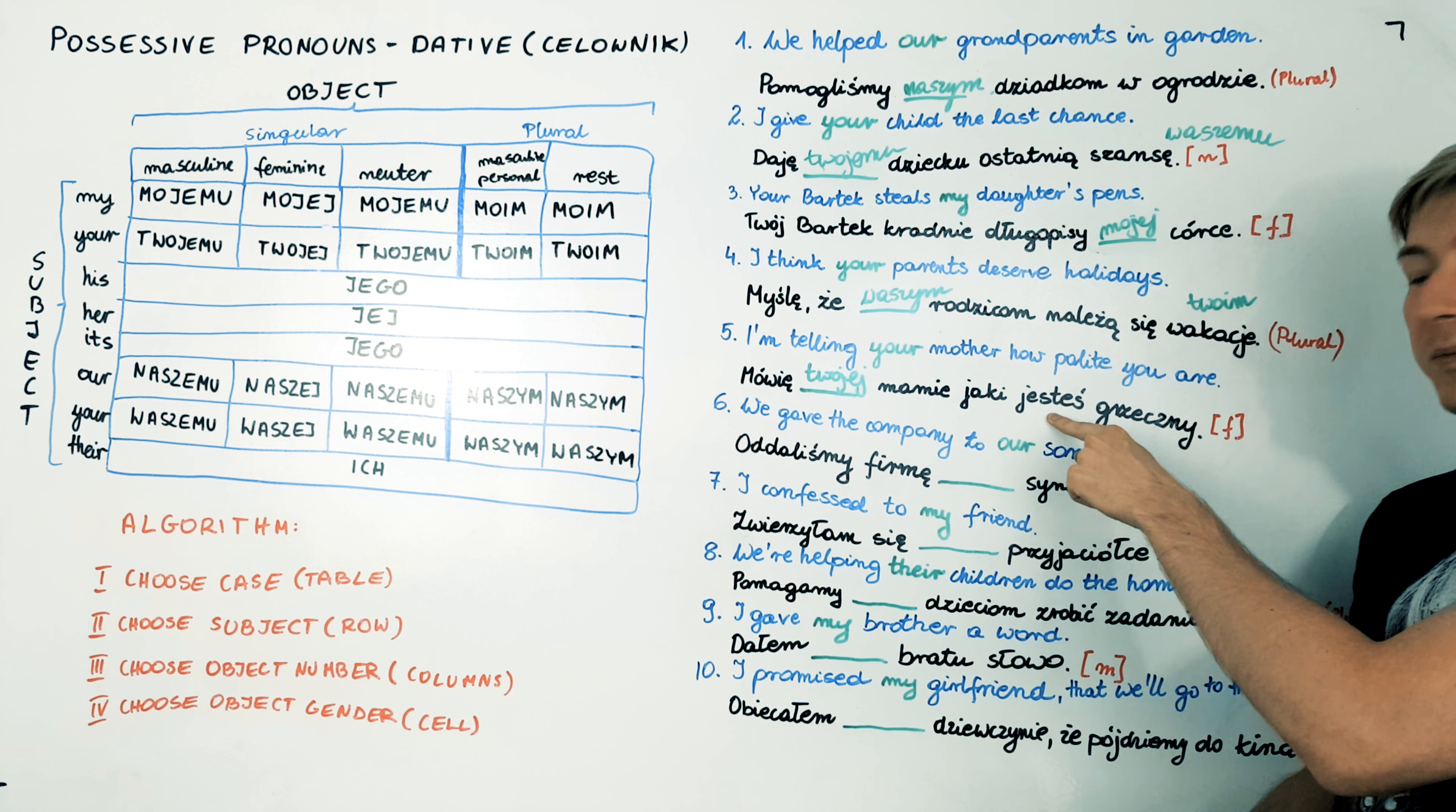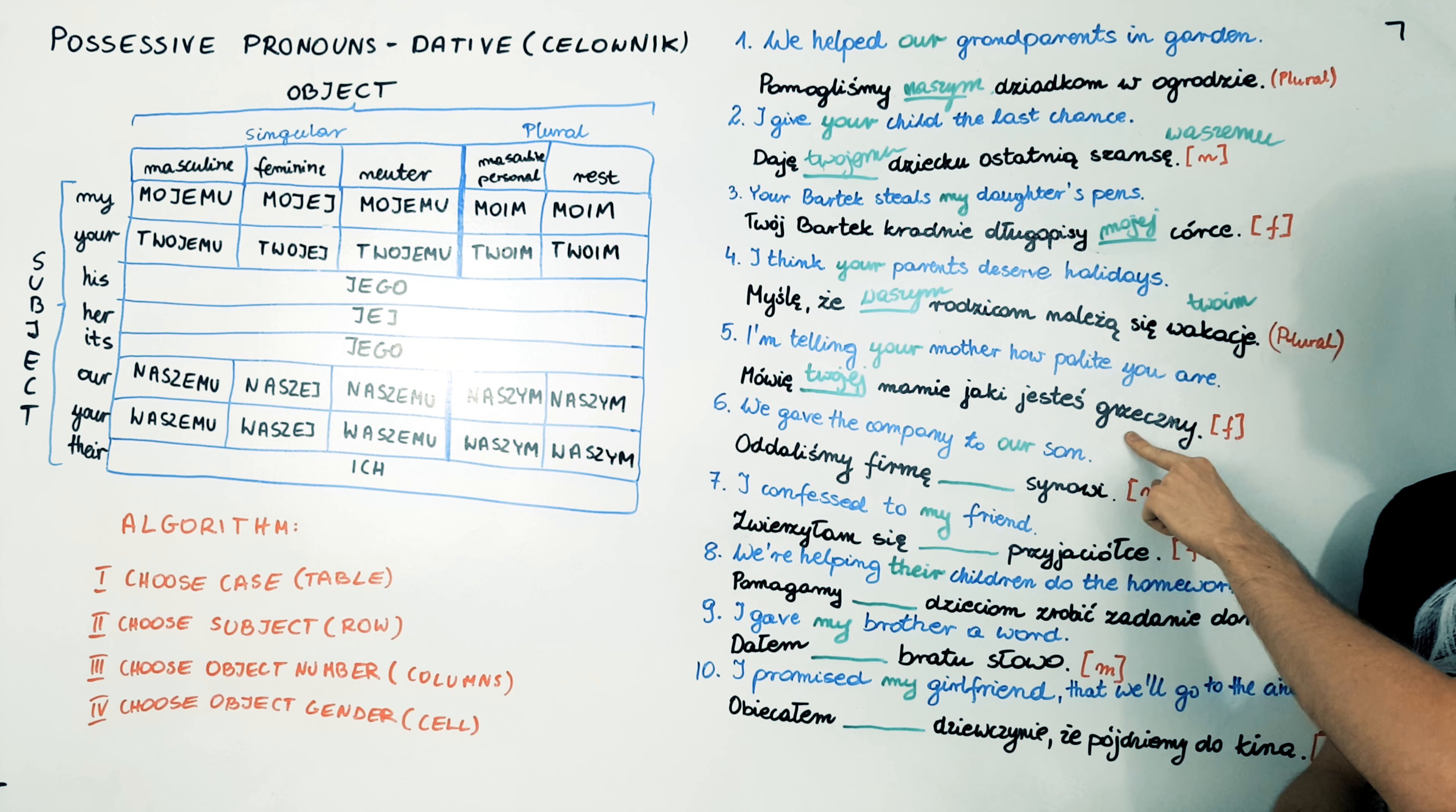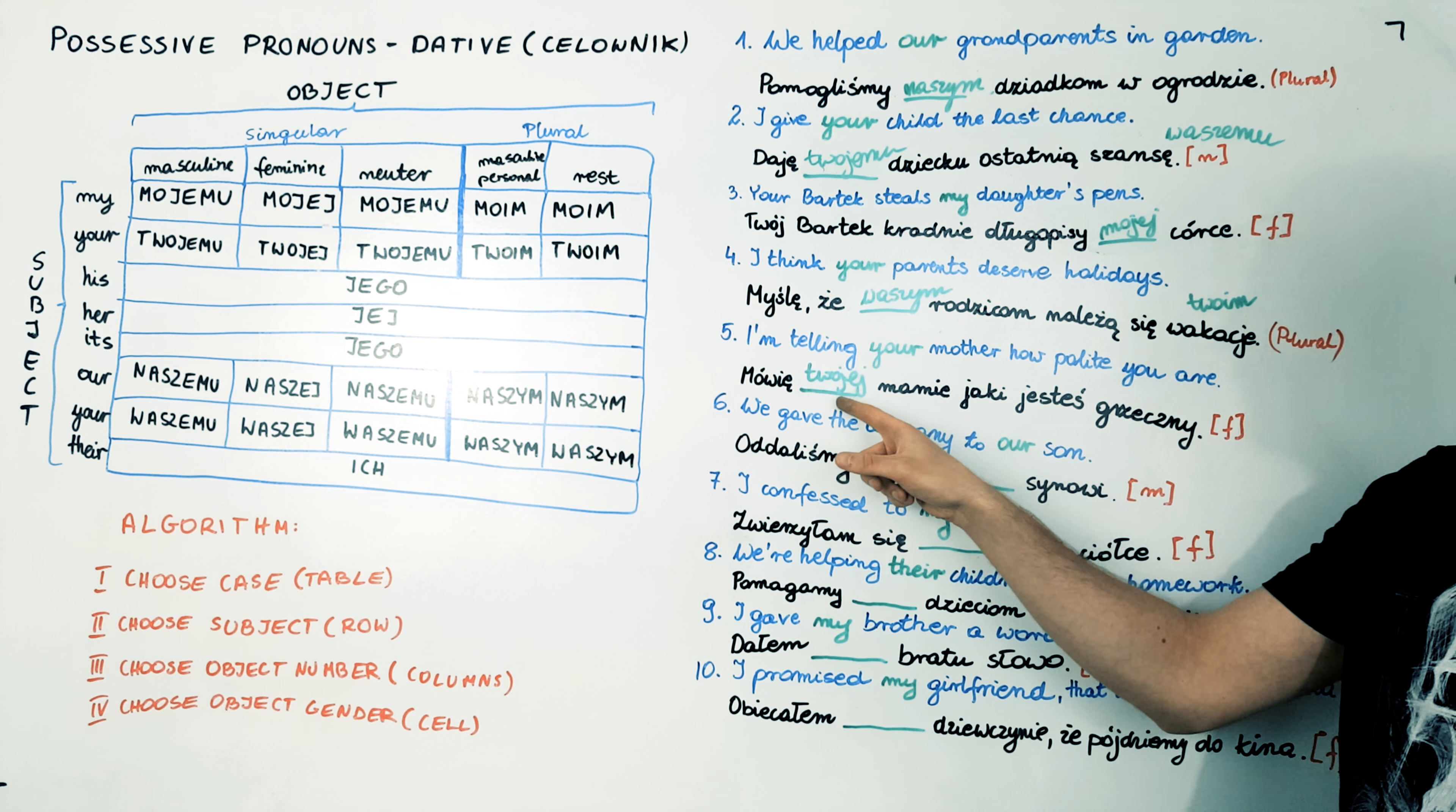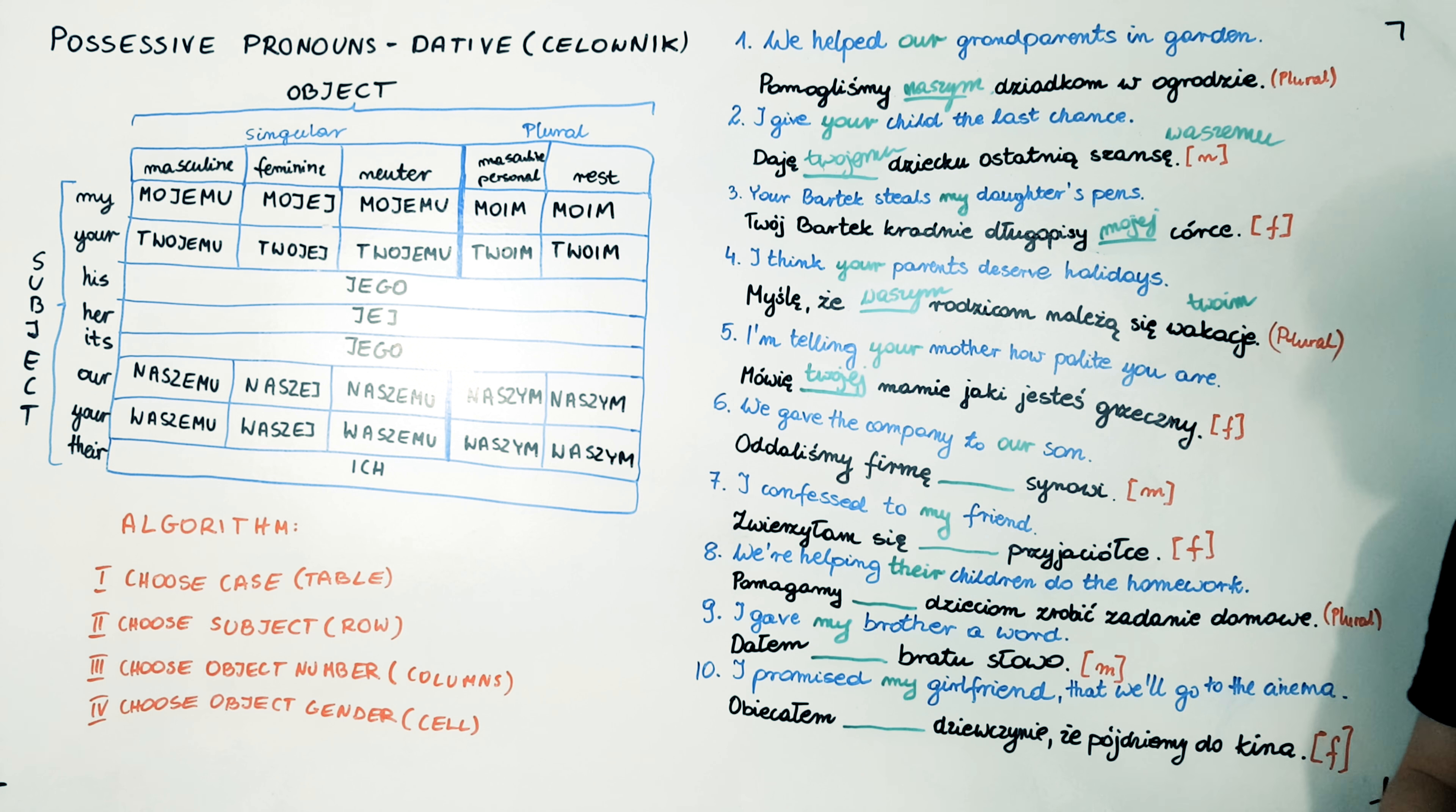Okay. It's because of the verb jesteś. It's for singular and also this adjective is for singular person. Okay, so the correct answer is mówię twojej mamie, jaki jesteś grzeczny. Try the next one.